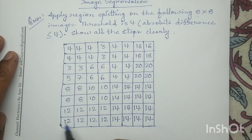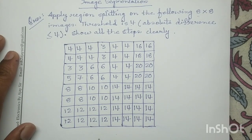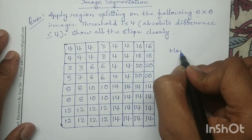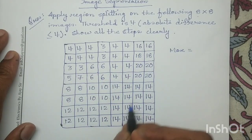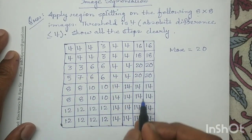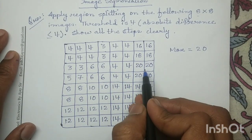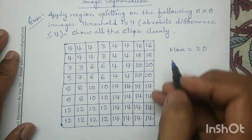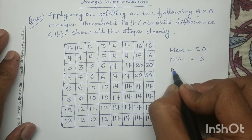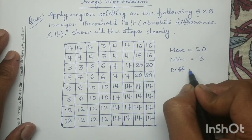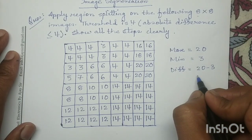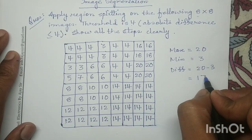Now look at this 8x8 image. First we have to compute for the entire image what is the maximum value. The maximum value for this entire image is 20, and the minimum value in this entire image is 3. So the difference — maximum minus minimum — we take the absolute difference, which is equal to 17.